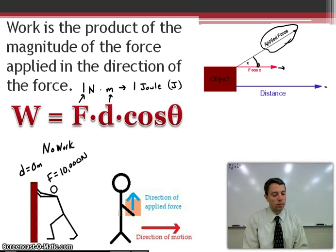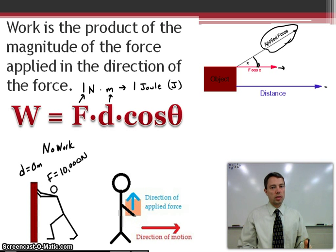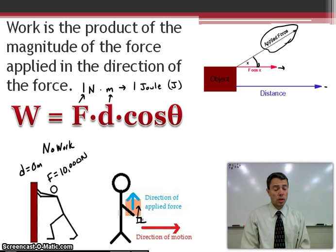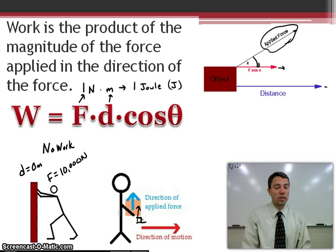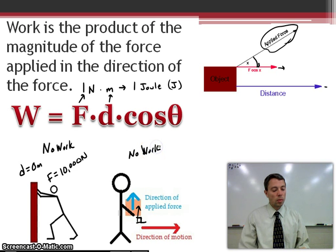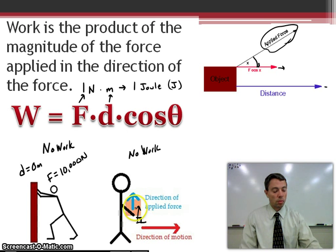The other example is a stick figure holding a box and walking along with it. We're applying a force, but the force we're applying is to keep the box up in our arms. The direction that we're moving is horizontal, so the applied force is acting at a right angle to the motion. There's zero work that can be done because the cosine of a 90-degree angle is zero — no work in this situation either. The stick figure did do some work picking the box up off the ground, but once they're holding it and moving across, there's no work being done.